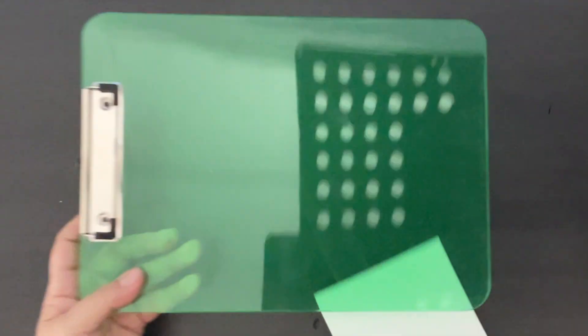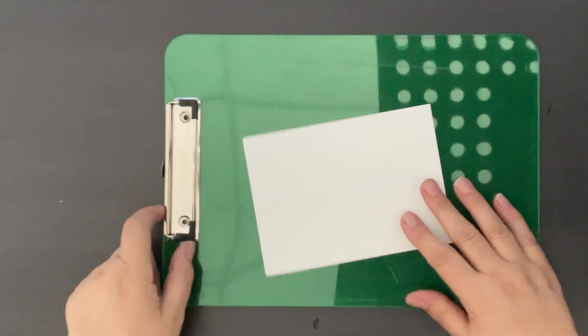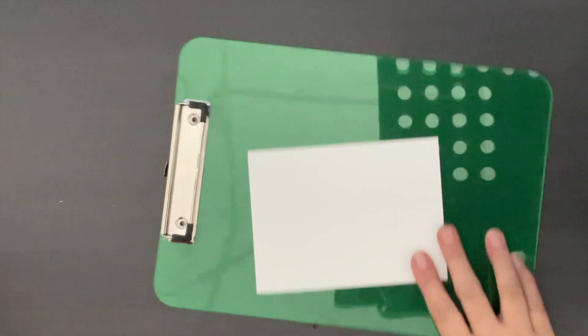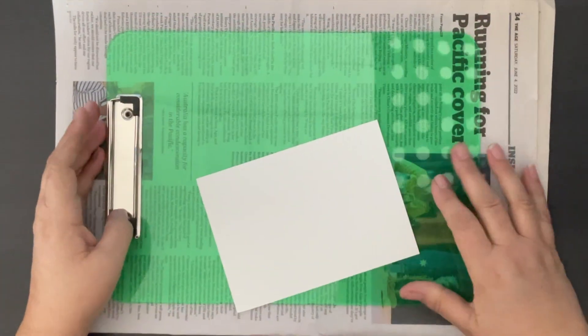And you need to come over to the printing station and I will have a clipboard and a piece of paper on it. We're going to put some newspaper on here because it's going to get a little bit wet.